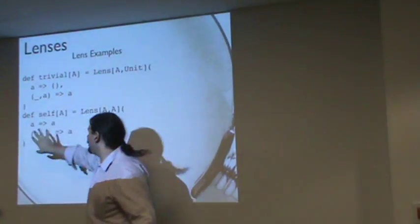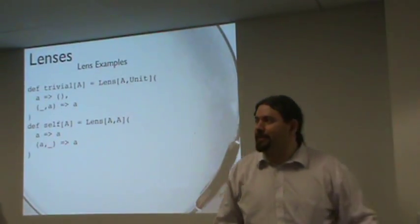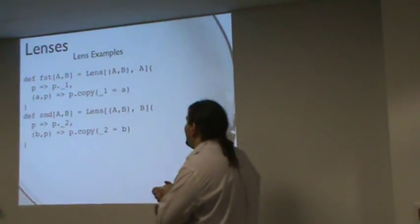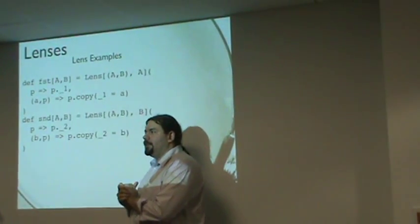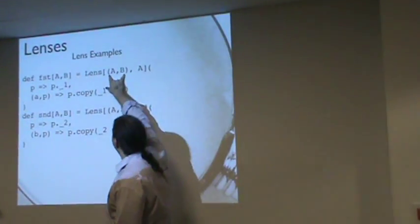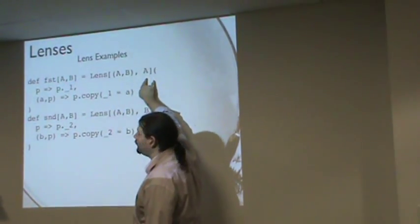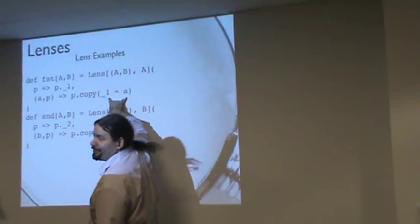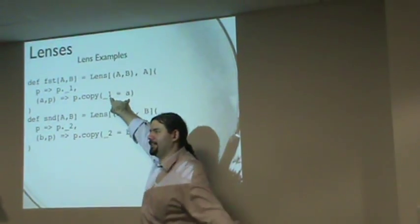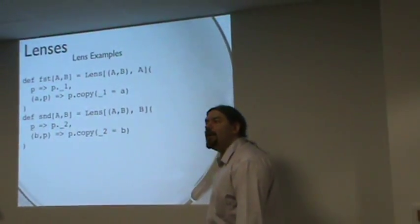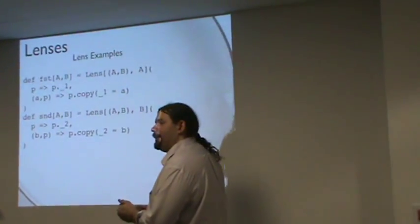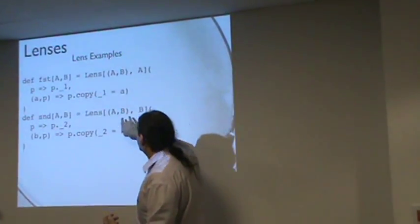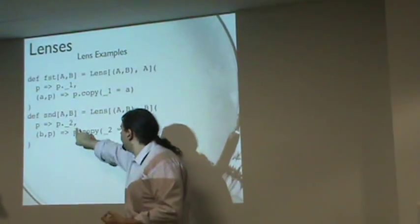The choice of which A to use is actually constrained by the lens laws — the choice of self is unambiguous. Now I can also define a lens that knows how to access a member of a pair. If I want a lens that gets from a pair of A and B, I can access it by getting the first element but set by changing the first element, using copy as a building block. Second is just going to access the B out of a pair, using copy similarly.